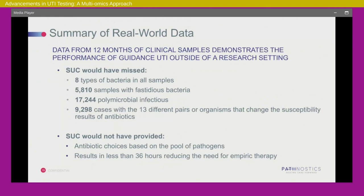Looking at real-world data across roughly 100,000 cases over a 12-month period: standard urine culture would have missed eight types of bacteria in all the samples, missed about 5,800 samples with fastidious bacteria, and most importantly would have missed 17,000 cases of polymicrobial infections, with over 9,000 having different pairs of organisms that would have changed the susceptibility patterns to antibiotics if they had been known to be present. Standard urine culture would not have provided the correct antibiotic choices for that group of pathogens, and on average would have taken over a day longer to provide results.